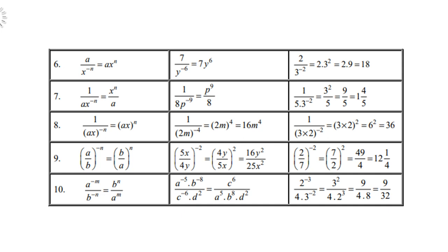Definition 9: a over b to the power negative n — just switch a and b, so a goes down and b goes up with a positive exponent. For example, 5x over 4y to the power negative n: switch numerator and denominator and the exponent becomes positive. Definition 10: when a to the power negative m is in the numerator and b to the power negative n is in the denominator, a goes down and b goes up.